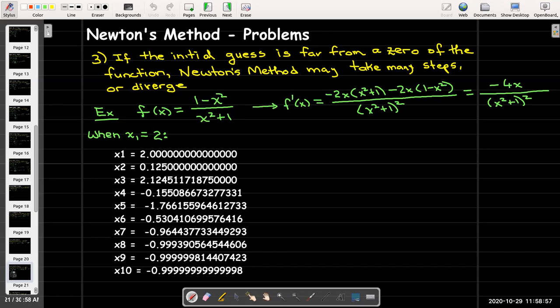But eventually it does converge to a zero. It takes a while. But by x sub 7 here, I'm at negative 0.96, which is pretty close to negative 1. And then I get very, very close to negative 1. So I did find a zero. It's just not the positive zero.